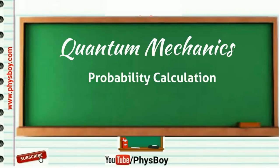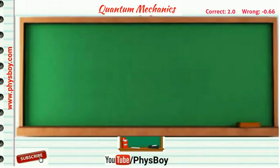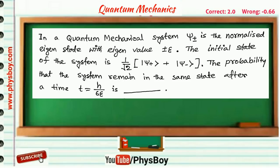The problem was: in a quantum mechanical system, ψ± is a normalized eigenstate with eigenvalue ±ε. The initial state of the system is (1/√2)[|ψ+⟩ + |ψ-⟩]. The probability that the system remains in the same state after time t = ℏ/(6ε) is...